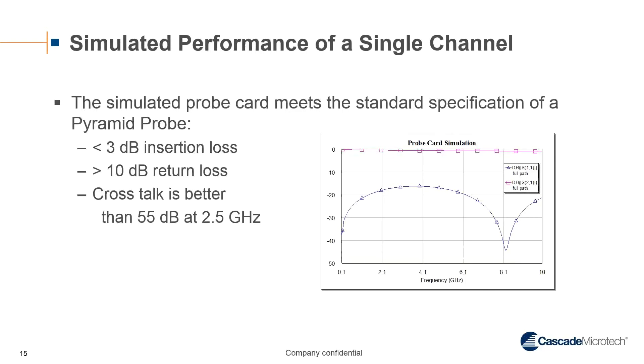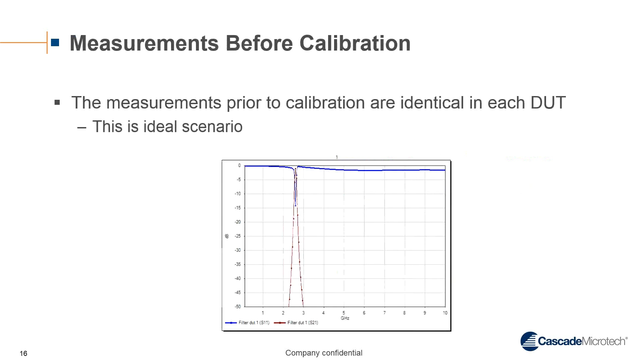I then simulated the performance of a single channel of the probe card to see would it meet our standard outgoing performance. Our standard outgoing performance is 3 dB insertion loss out to the specified frequency, better than 10 dB return loss up to specified frequency. As the figure on the right hand shows, it more than met those conditions. I also simulated what is the crosstalk between two adjacent lines, and it is better than 55 dB at 2.5 gigahertz. We then also looked at the measurements before calibration. So this would be analogous to a cable cal in your test setup. The measurements prior to calibration between site 1 and site 2 are actually identical with each DUT. This is an ideal scenario and was done purposefully in order to remove any other error terms in the measurement.